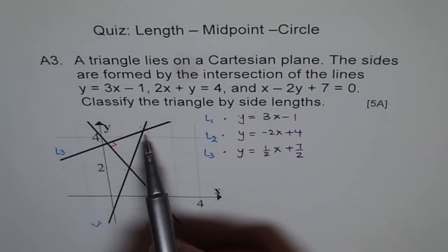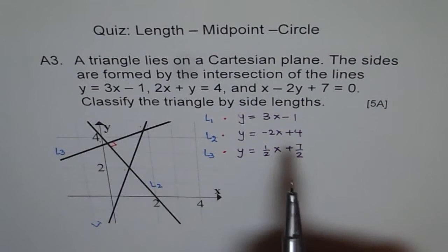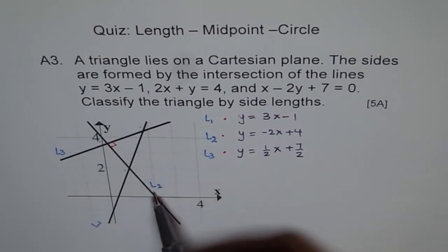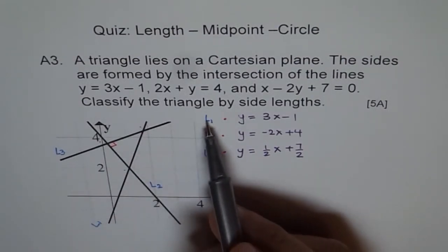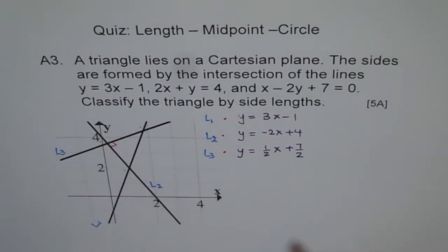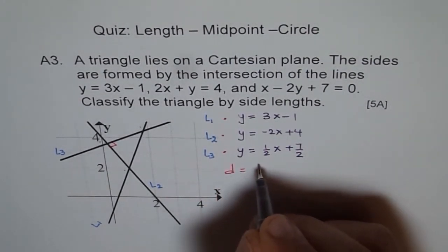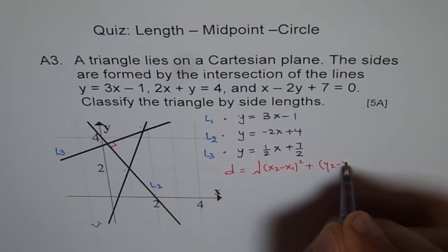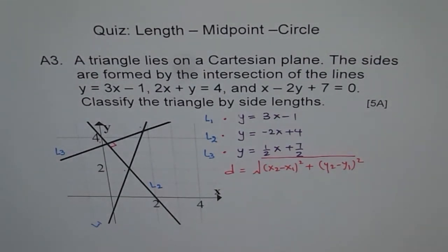Similarly, solve lines 2 and 3 to get their intersection point, and solve lines 3 and 1 to get the third vertex. Once you have all three points, use the distance formula: distance equals the square root of (x₂ minus x₁) squared plus (y₂ minus y₁) squared. Comparing the distances will let you classify your triangle as isosceles or scalene.